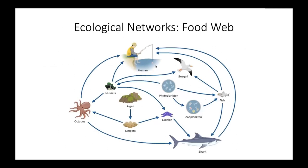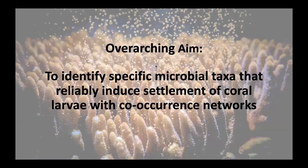Networks are commonly used across the field of ecology. For example, a food web network depicts species as nodes and the flows of energy as edges, untangling the complexity of patterns occurring in a rocky shore community - which we could do at a microscopic scale when looking at microbial communities. By utilising co-occurrence networks to capture patterns in the biofilm communities at different rates of coral larval settlement, we could pinpoint the inductive and inhibiting microbes. Identifying reliable inducers to promote the settlement of coral larvae in aquaria would dramatically improve reef restoration efforts based on aquaculture as it would overcome that settlement bottleneck. The overarching aim of my research is to identify specific microbial taxa that reliably induce settlement of coral larvae with co-occurrence networks.